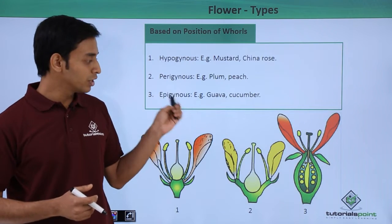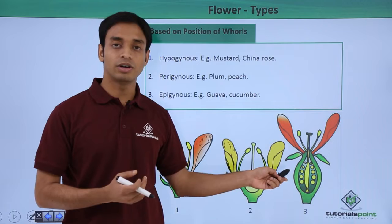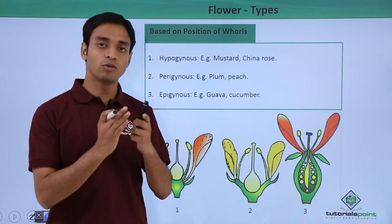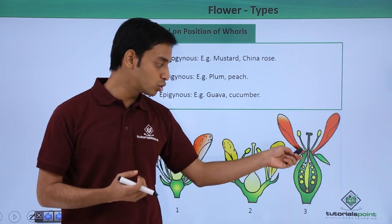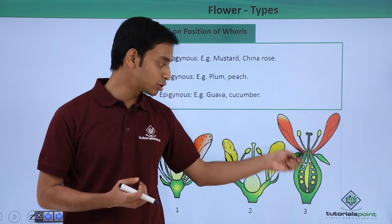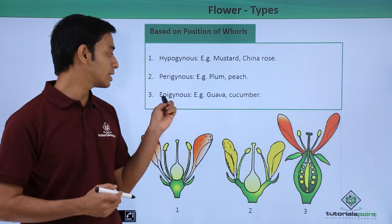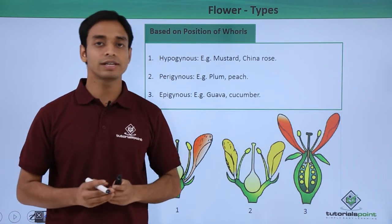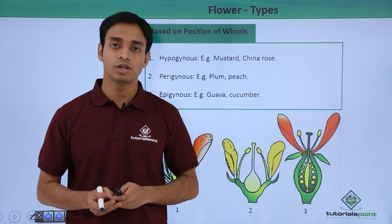The third type is known as epigynous flowers. Here the ovary is not visible outside at all — it is covered totally by the thalamus. The thalamus extends upward and engulfs the ovary, so the ovary becomes fused with the wall of the thalamus. The ovary is completely inside while all other floral parts are outside. This ovary is referred to as the inferior type of ovary. Examples are guava and cucumber.